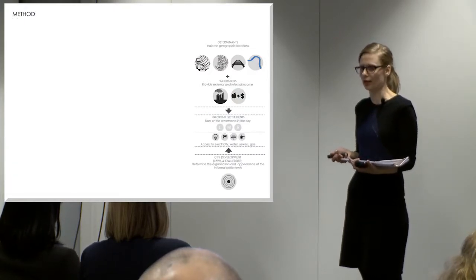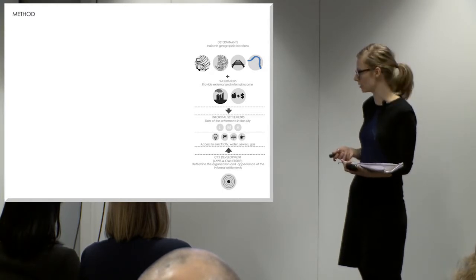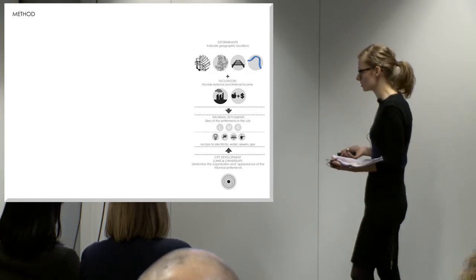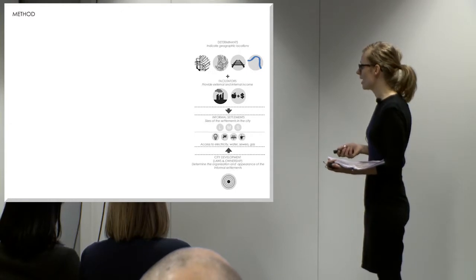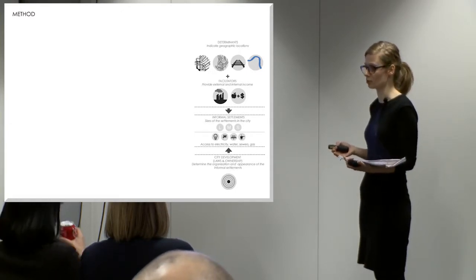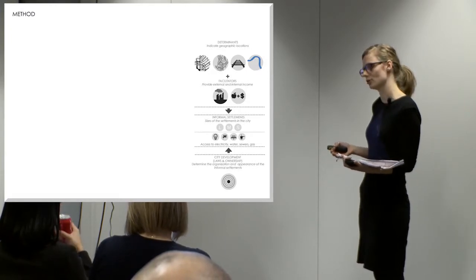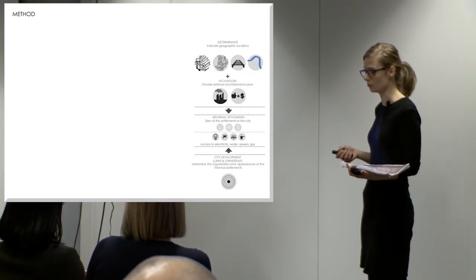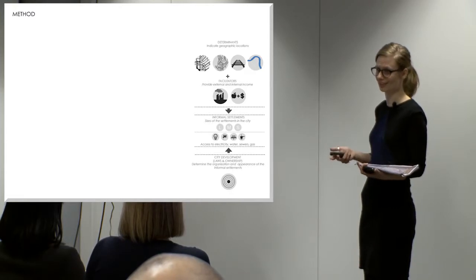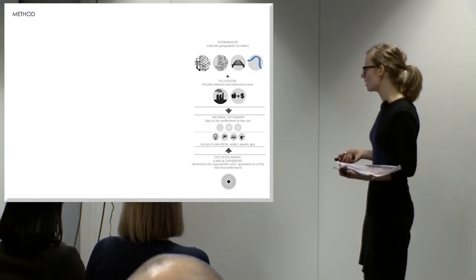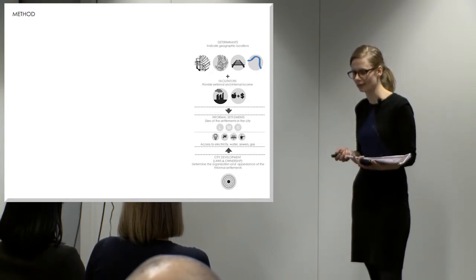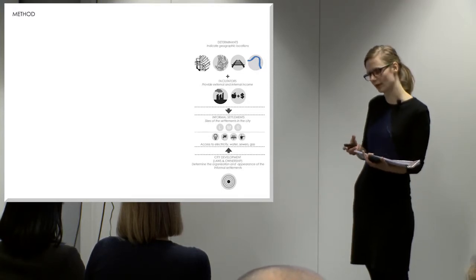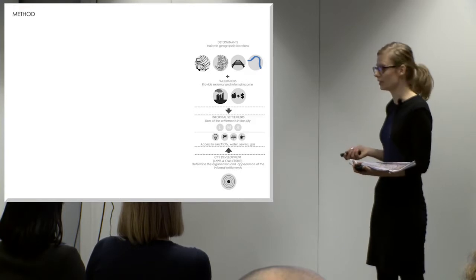At this stage, I formed a methodology to investigate and assess informal settlements. I could look into determinants, which describe geographic locations, and facilitators — the sources of local income. Then I could describe the informal settlement in terms of its size, and also describe quality of life by assessing whether people have access to basic services such as gas, water, electricity, and sewers. Most of all, it's important to understand land ownership and city policies to understand why slums function and are organized in a specific way.